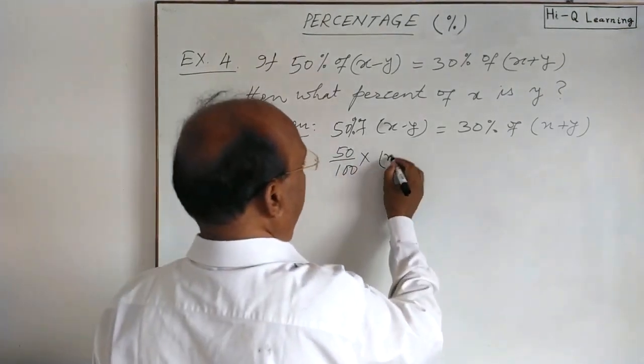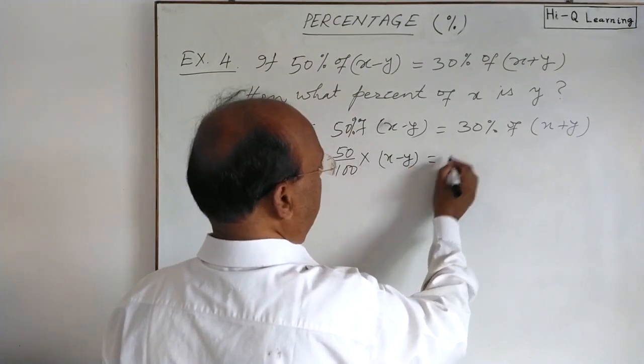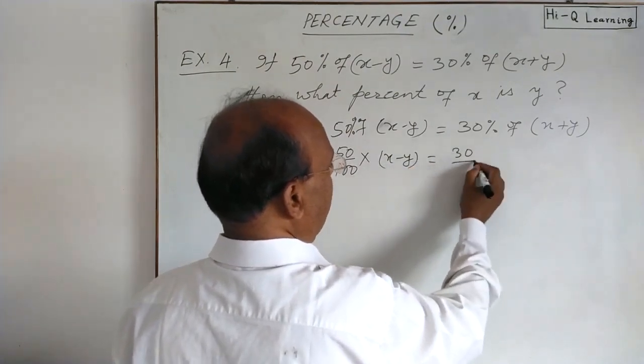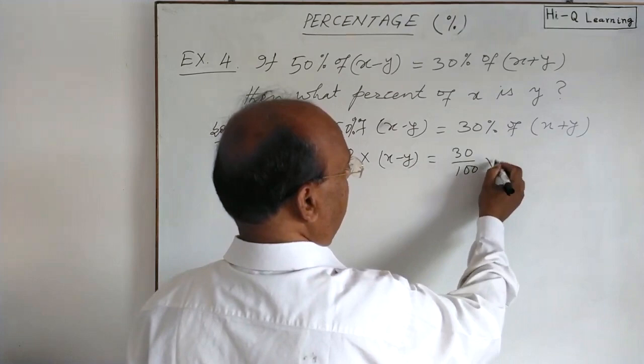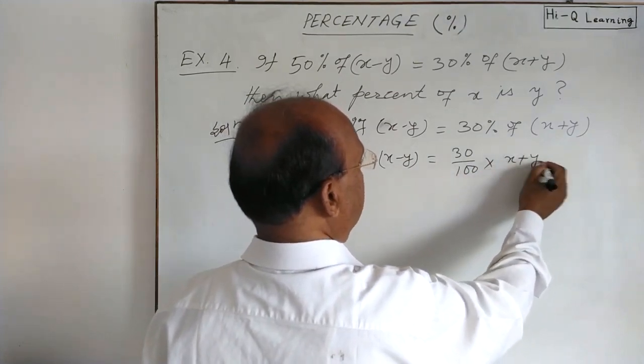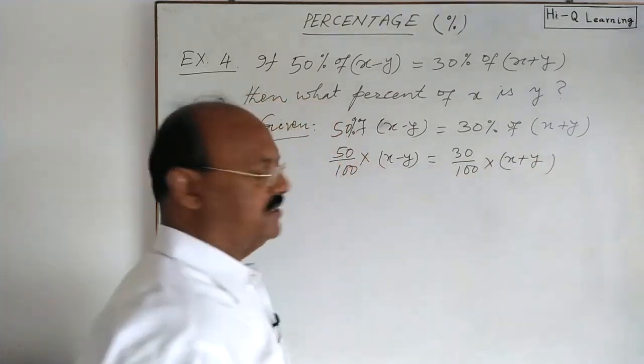And x minus y. Similarly, in right hand side also, this will be 30 by 100 into x plus y. Now let us simplify it.